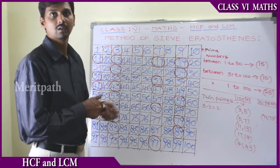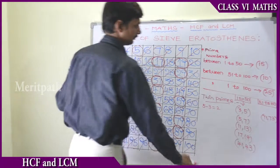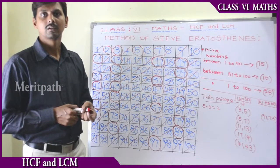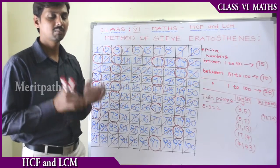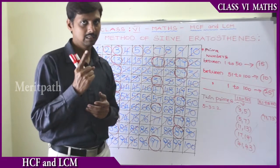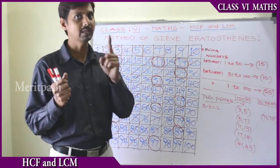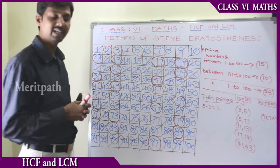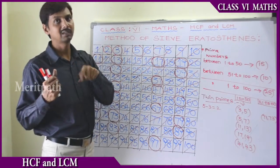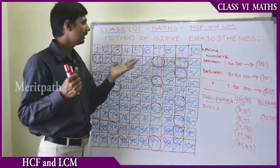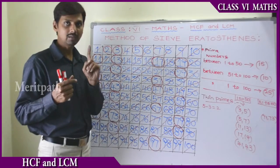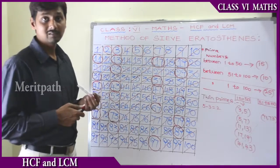Let's go for the concept of co-primes. Co-primes are those numbers which are having only one common factor, that is 1. The common factor of those two numbers is 1 — we call them co-primes. For example, if you take any one prime number and another number other than that prime number, those numbers will be having only one common factor that is 1, so those numbers are called co-primes.